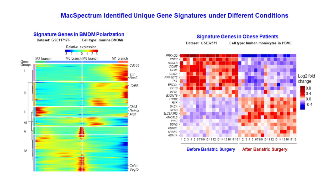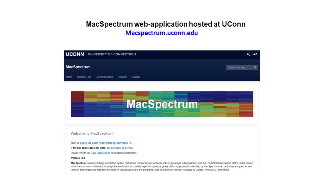For example, we applied MacSpectrum to identify a set of diabetic risk genes in human circulating monocytes isolated from obese patients before or after bariatric surgery, validated in other datasets. For more examples and applications of MacSpectrum, please check out our article. We are now also providing a web version of MacSpectrum for any researchers to use for their own projects.